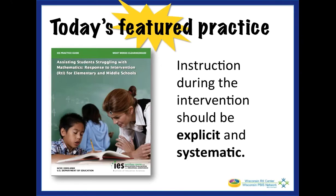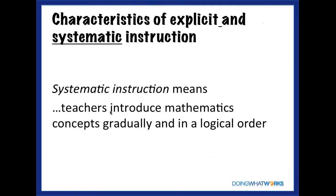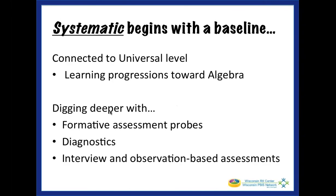Now we're going to go a little bit deeper into what we mean by the terms explicit and systematic. Starting with systematic — one big idea is that we're talking about a deliberate building on and connecting to students' prior learning. To do this, we need to have a clear understanding of the learning progressions of the standards as well as where students are on that continuum. Often this means we need to dig deeper to get a fuller picture of students' current understanding and misconceptions around important math concepts.